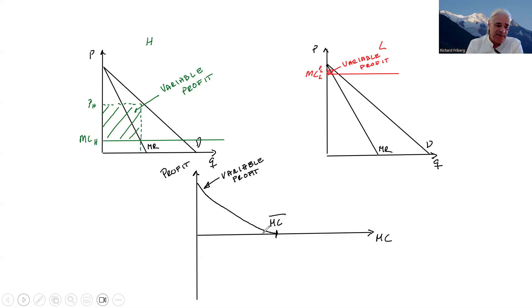But let's not just look at variable profits. We also have the fixed cost of entry. So this would be the fixed cost, which means that this is the overall profit—variable profit minus the fixed cost of entry.